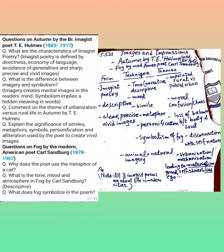The three poems we are going to study under this heading are: Autumn by T.E. Hulme, who is a modern British poet; Fog by Carl Sandburg, who is an American poet; and Metro by Ezra Pound, who is an expatriate American poet. He is also called the founder, the father of the imagist movement.